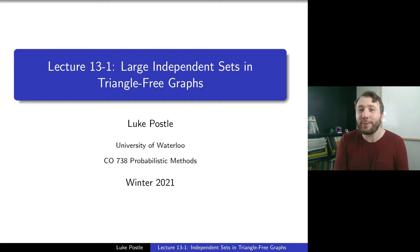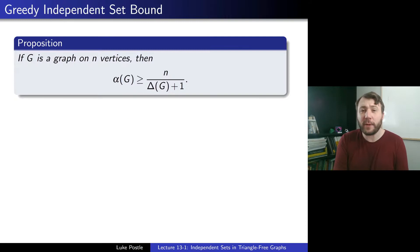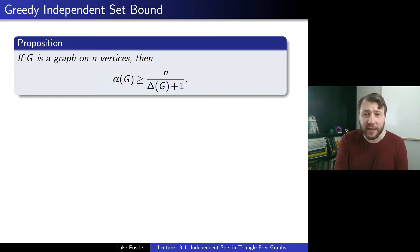So what about independent sets? You might recall the greedy independent set bound: if G is a graph on n vertices, then the independence number of G — that's the size of a maximum independent set in G, denoted alpha(G) — is at least n over delta(G) plus 1, where delta(G) is the maximum degree of G.